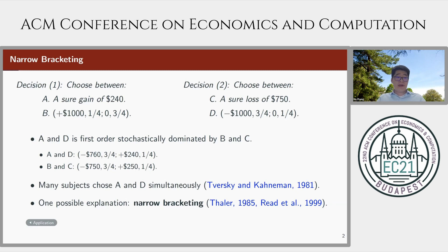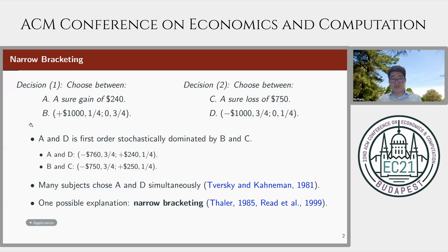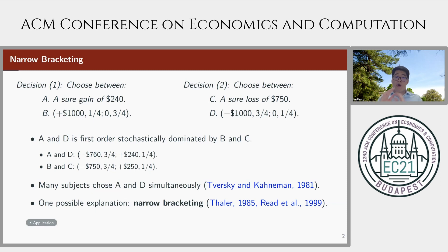One possible explanation is narrow bracketing, which states that a decision maker who faces multiple decisions tends to choose an option in each decision without full regard to other decisions. In this experiment, choosing the safe option A in decision one about gains can be rationalized by risk aversion over gains. And choosing the risky option D in the second decision can be rationalized by risk seeking over losses, both of which are quite standard in economics.